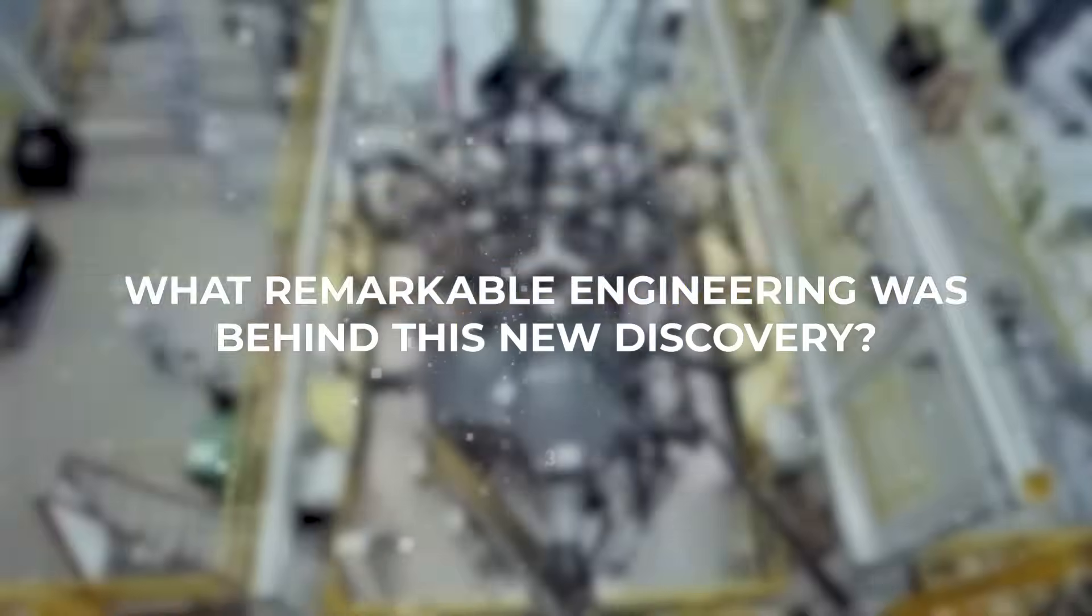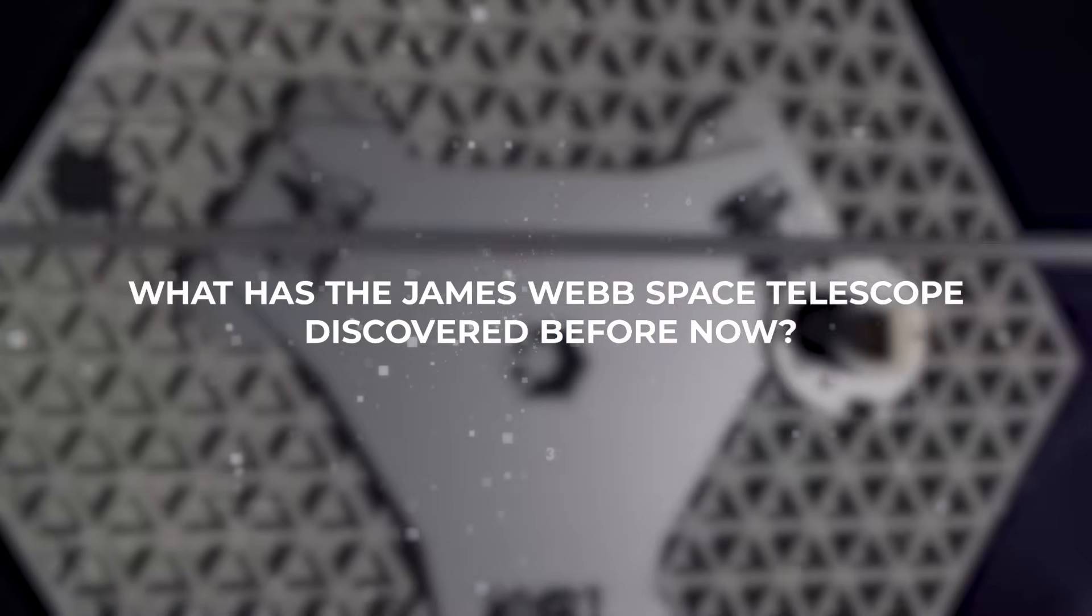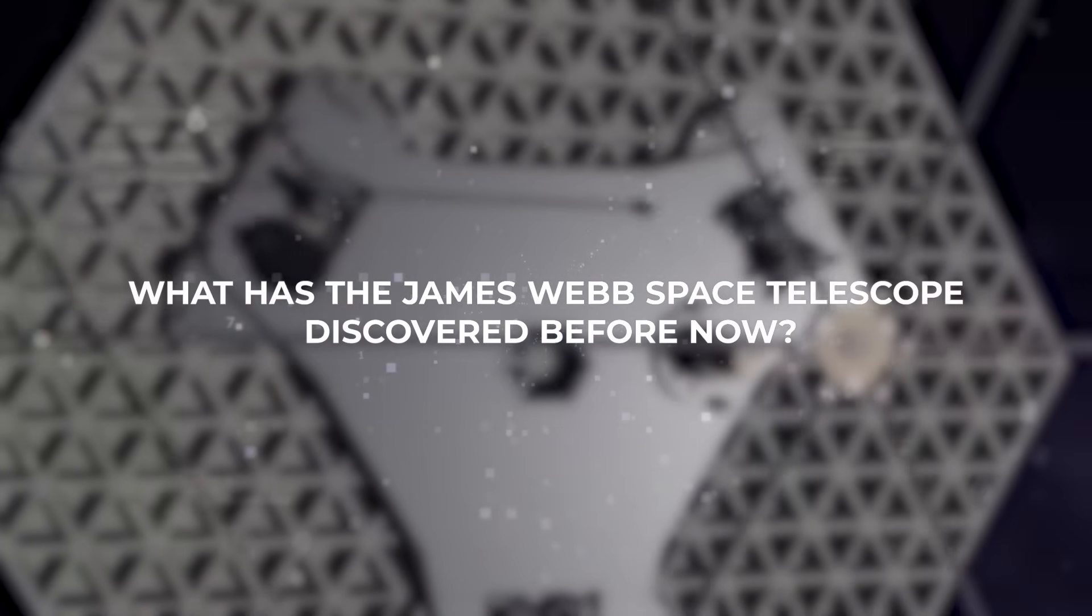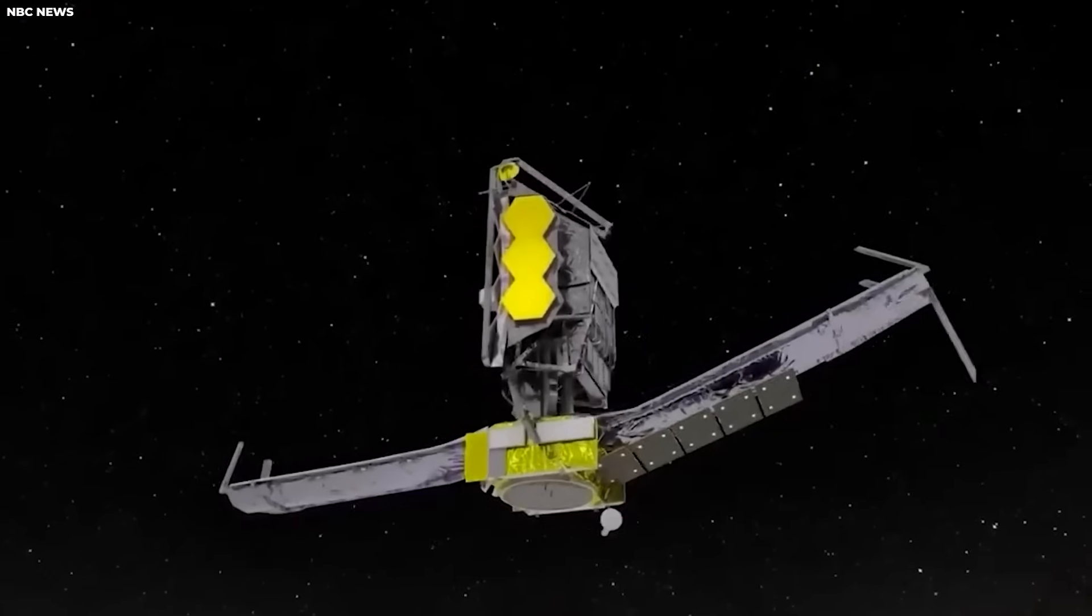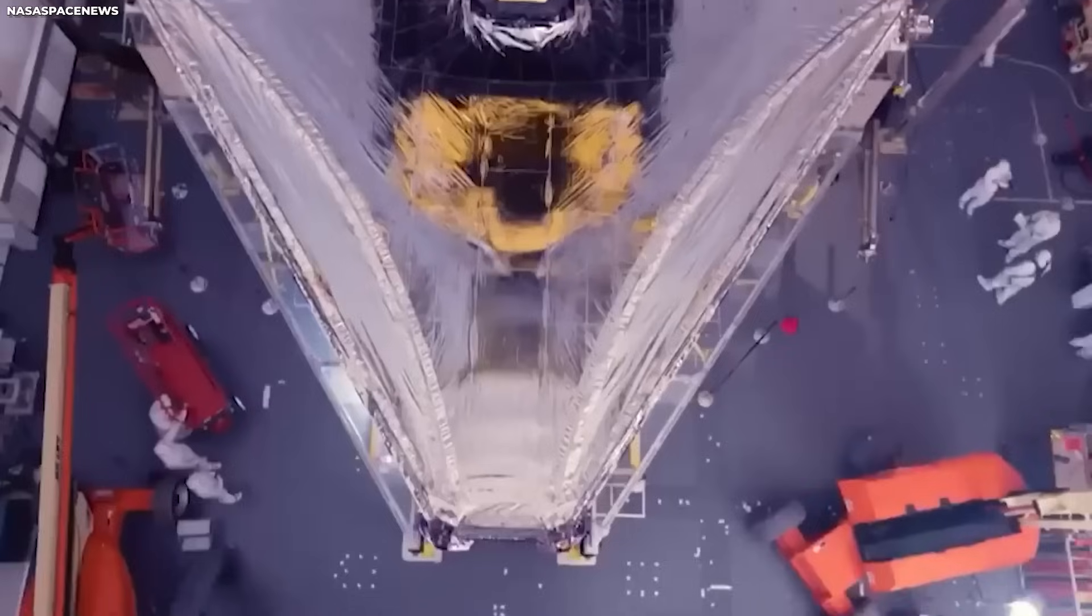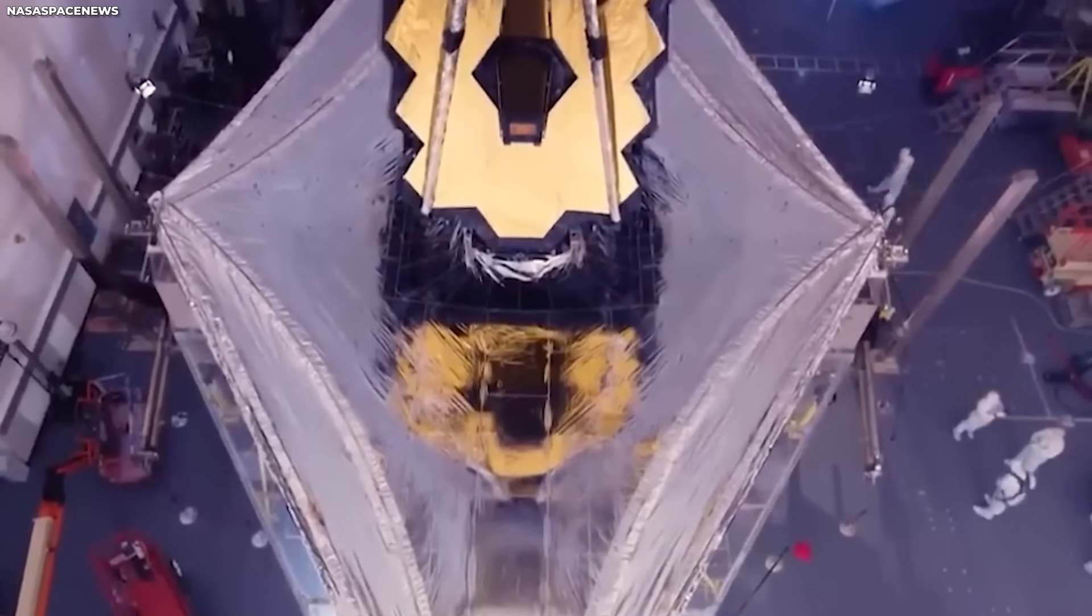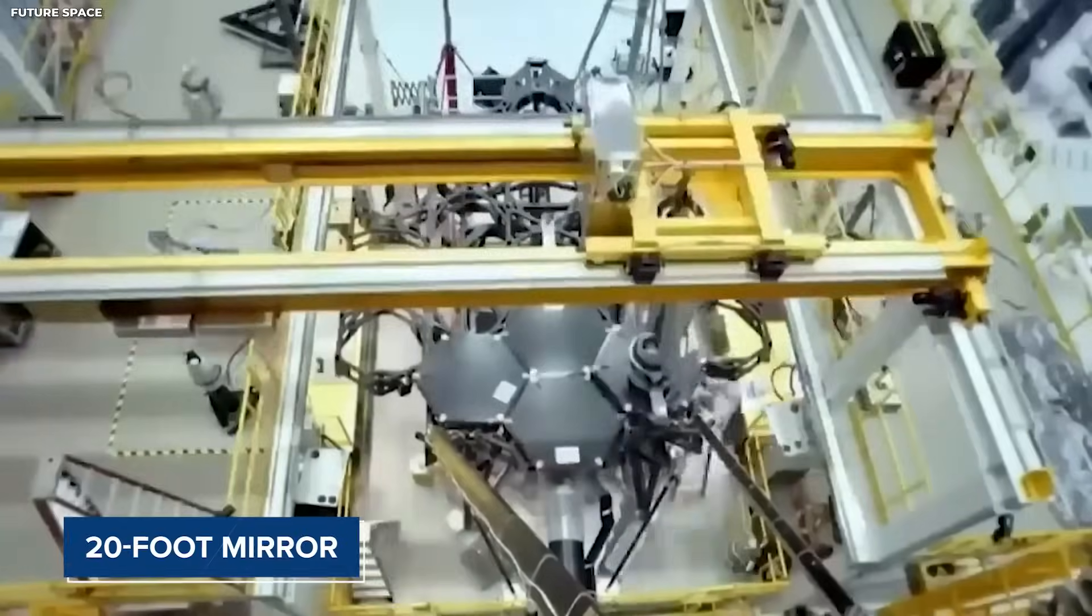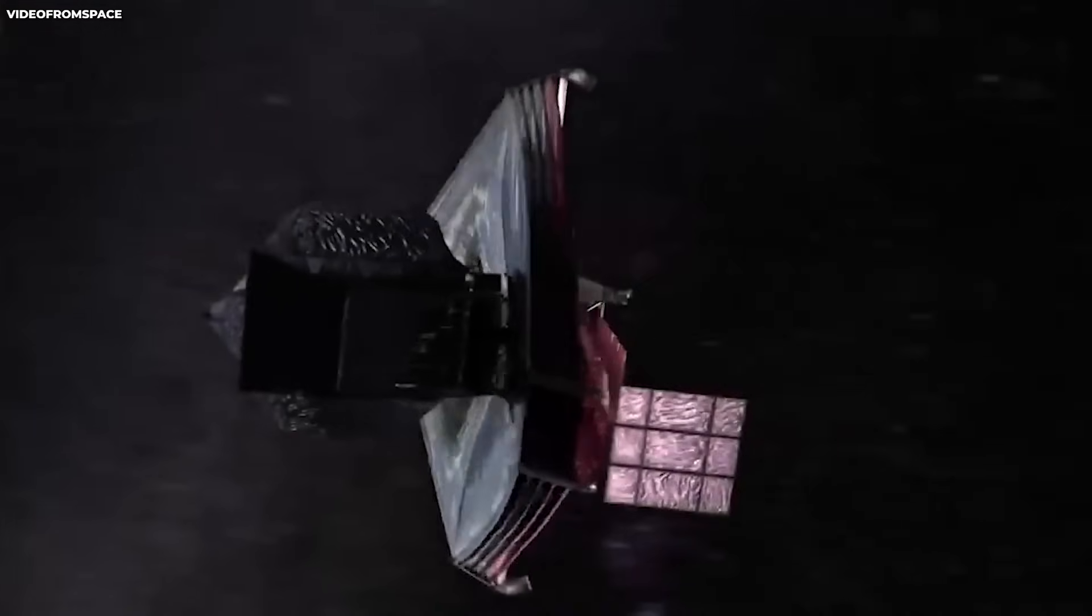What remarkable engineering was behind this new discovery? And what has the James Webb Space Telescope discovered before now? The James Webb Space Telescope, JWST, is a marvel of engineering, employing remarkable technological advancements to achieve its awe-inspiring feats. At the heart of its capabilities lies a massive 20-foot mirror, meticulously designed to collect and reflect light to its array of instruments.